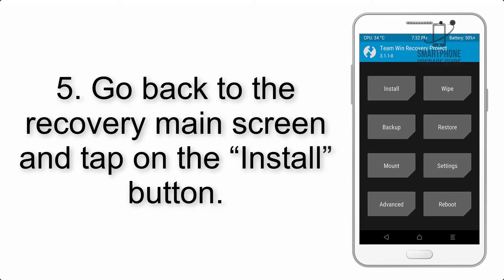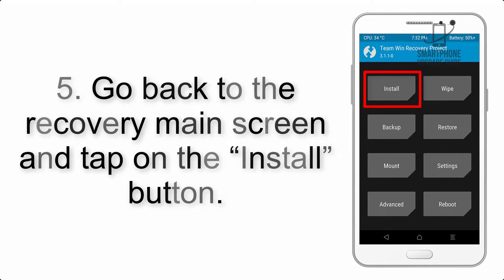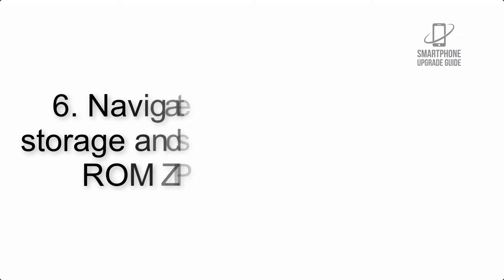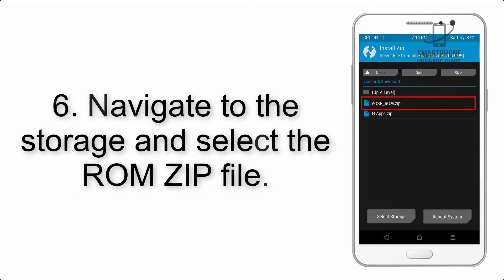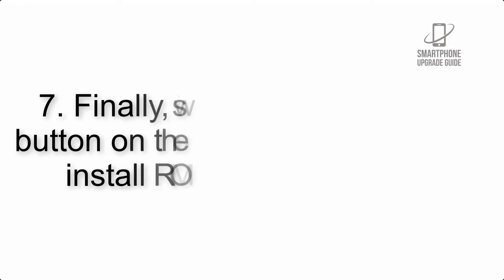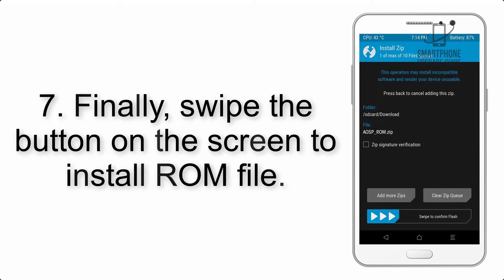Step 4: Swipe the button to wipe the device. Step 5: Go back to the recovery main screen and tap on the Install button. Step 6: Navigate to the storage and select the ROM zip file.